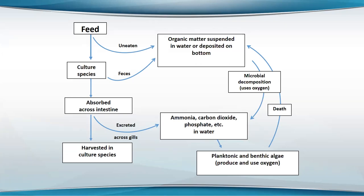Microbial decomposition of the organic matter produces ammonia, carbon dioxide, and phosphate. This ends up in pond systems causing more phytoplankton production — they die and use oxygen, and the nutrients are recycled. I think most people are vaguely familiar with this.